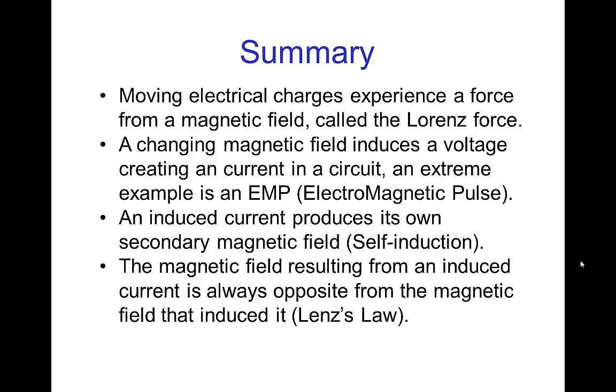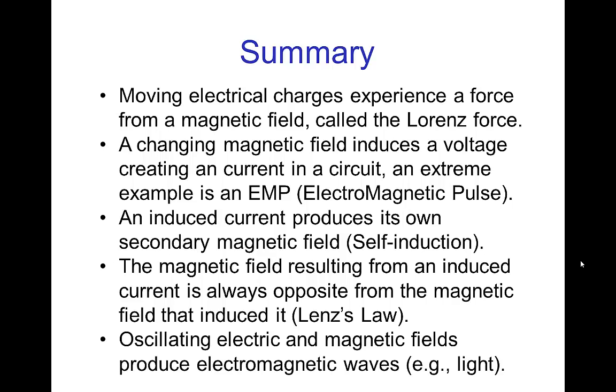The magnetic field resulting from an induced current is always opposite from the magnetic field that induced it. That's Lenz's law. So we saw that in the magnetic levitation and in the magnetic breaking, which was the magnet falling very slowly down a metal pipe. And then finally, oscillating electric and magnetic fields produce electromagnetic waves. An important example of that is visible light. So that is a summary of the connection between electricity and magnetism, finishing with appropriately enough, light.